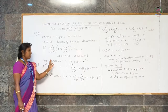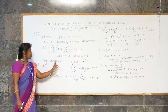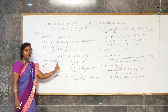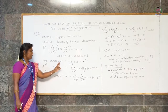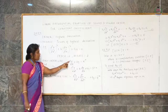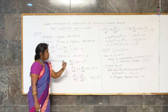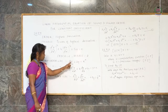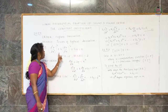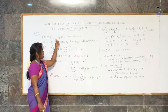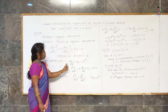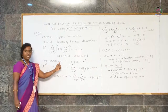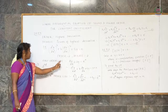Now let us consider an example of a first order linear differential equation: dy/dx plus 2y equals e^x. Here the highest derivative is of order 1, so order is equal to 1. Therefore, it is said to be a first order linear differential equation.